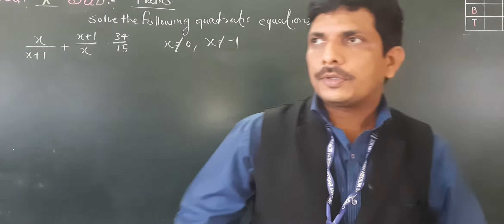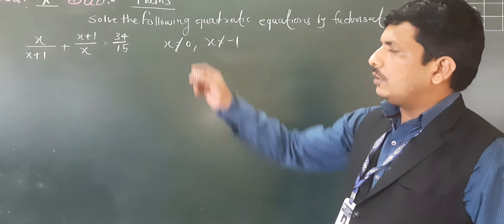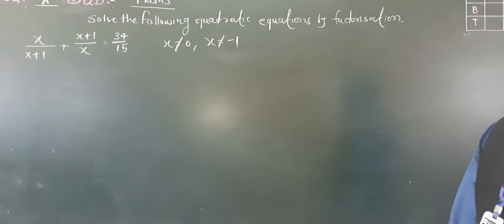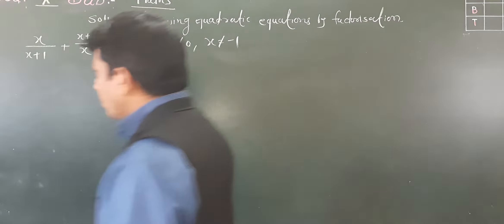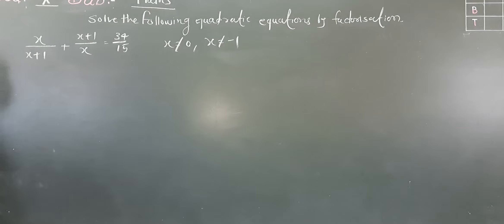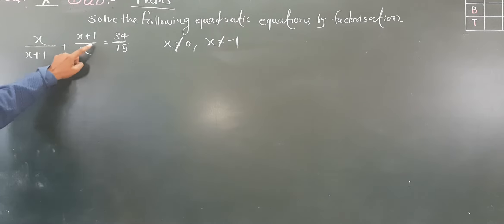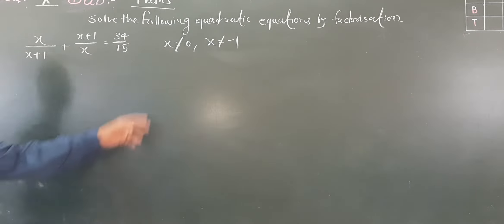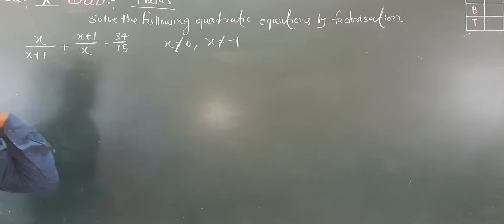Hello everybody, today we are going to see some more examples. The question is: solve the following quadratic equations by factorization. Our first example is x/(x+1) + (x+1)/x = 34/15, where x is not equal to 0 and x is not equal to minus 1.